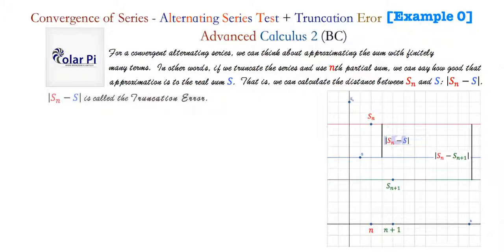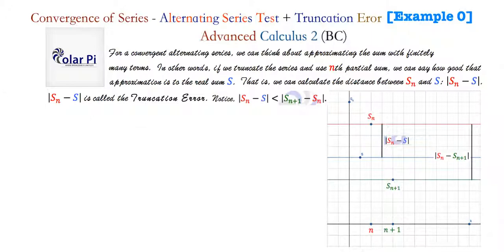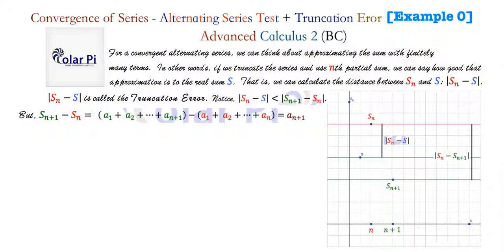So let's say more about what I just said. The truncation error is this distance between S_N and S in absolute value — that's what the truncation error is, and it's what tells us how good an approximation S_N is to S. Notice that the distance between S_N and S is less than the distance between S_{N+1} and S_N. But the difference between S_{N+1} and S_N has to be A_{N+1}. So therefore, the distance between S_N and S, which is less than the distance between S_{N+1} and S_N, has to be less than the absolute value of A_{N+1}.